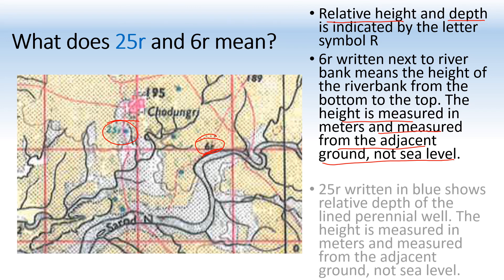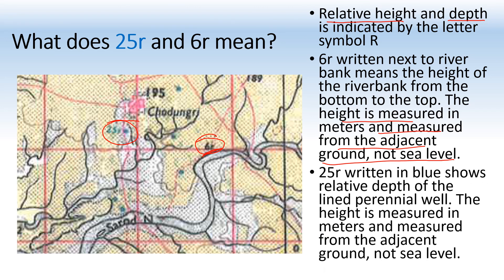25R written in blue indicates relative depth — when it is blue it is depth, when it is black it is height. It shows the relative depth of a lined perennial well. The depth is measured in meters from the adjacent ground, not from sea level.